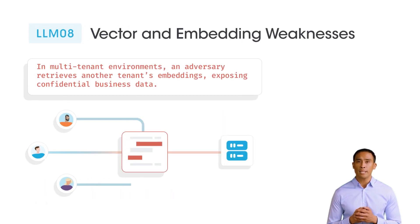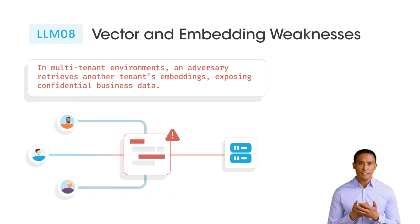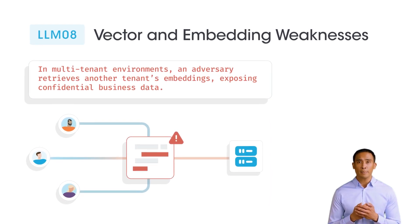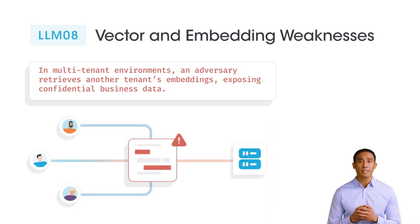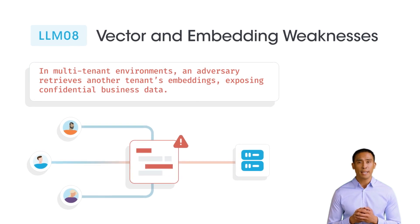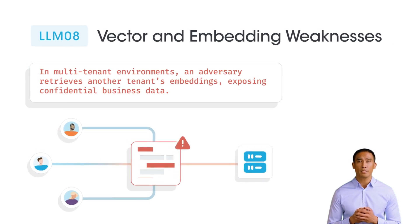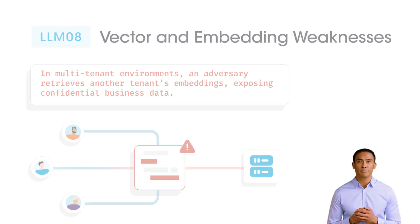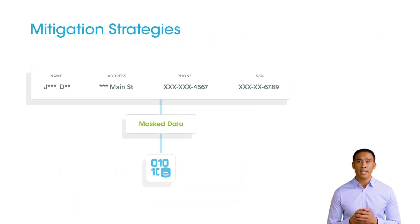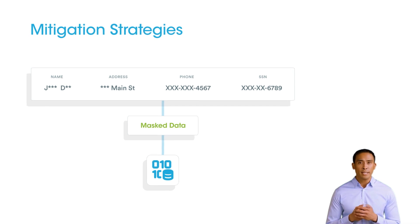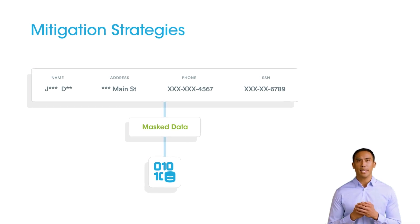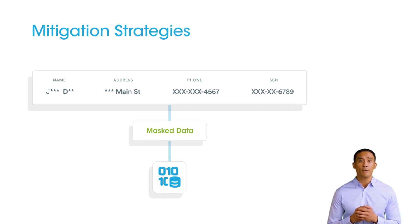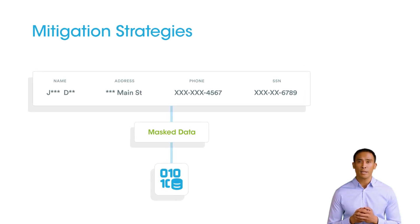Vector and embedding weaknesses arise in RAG systems when adversaries exploit vector databases to inject malicious content, manipulate model behavior, or access sensitive information. Example: in multi-tenant environments, an adversary retrieves another tenant's embeddings, exposing confidential business data. Sanitize and classify sensitive data before storing it as embeddings in VectorDB. Enforce entitlement controls to prevent unauthorized embedding retrieval. Use retrieval firewalls to detect and block malicious or tampered embeddings.